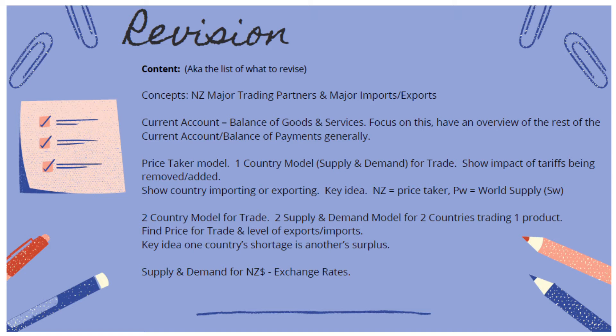The key idea is that New Zealand is a price taker. We use the world supply (SW) and the world price (PW). The two-country model looks at two different countries — which exports, which imports — for one product in particular. Before I left we did lots of these on big A3 laminated sheets with examples. Go back and find those; I think we did it for rice and clothing.